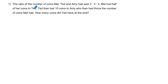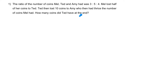The ratio of the number of coins Mel, Ted, and Amy had was 3 to 5 to 4. Mel lost half of her coins to Ted. Ted then lost 10 coins to Amy, who then had three times the number of coins Mel had. How many coins did Ted have at the end?